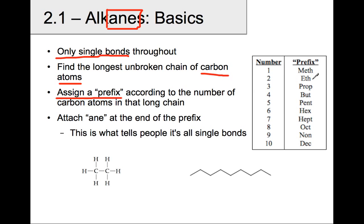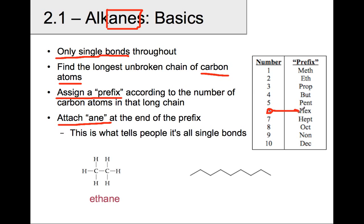If it's a 2-carbon chain, the prefix will be eth. If it's a 5-carbon chain, the prefix will be pent. A 9-carbon chain, the prefix will be non, and you'll use -ane at the end to tell people that it's all single bonds. So a 6-carbon chain that's all single bonded is hexane.